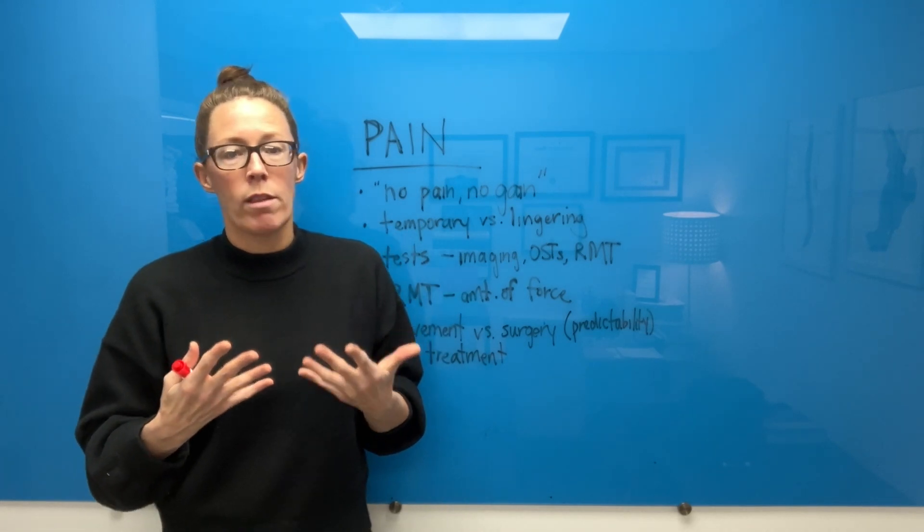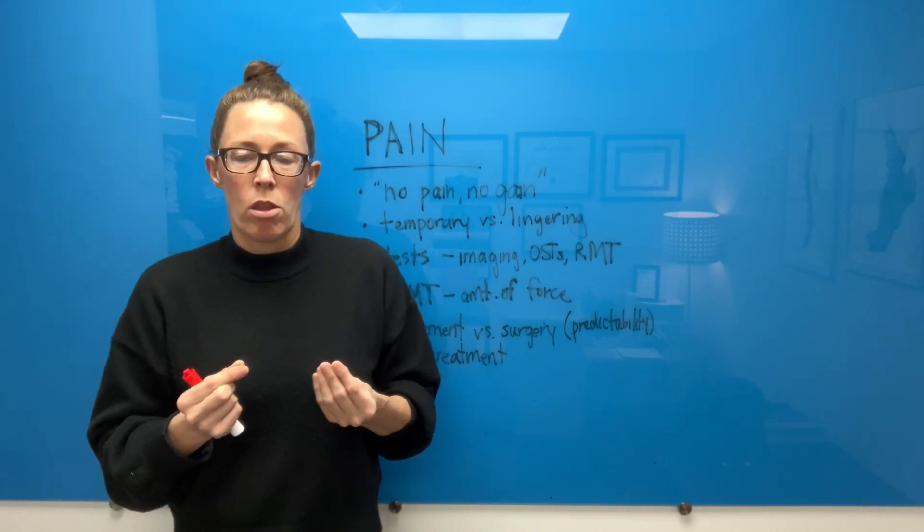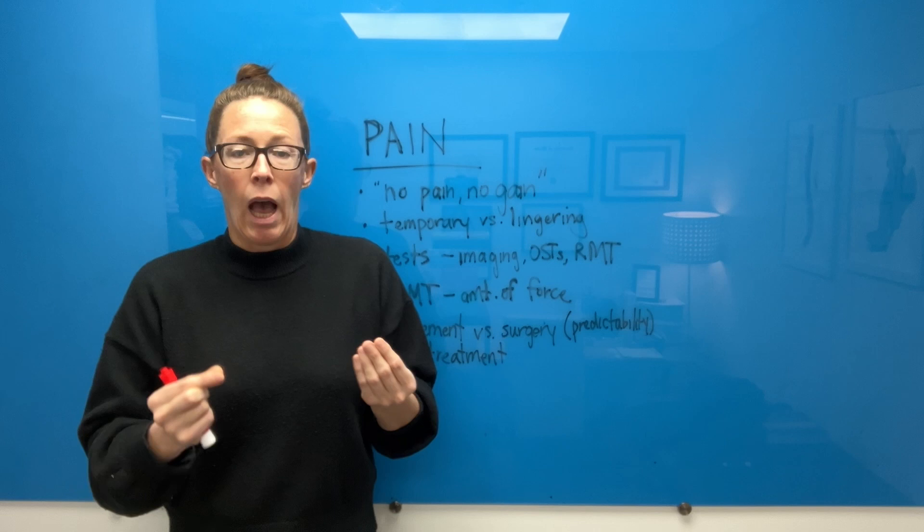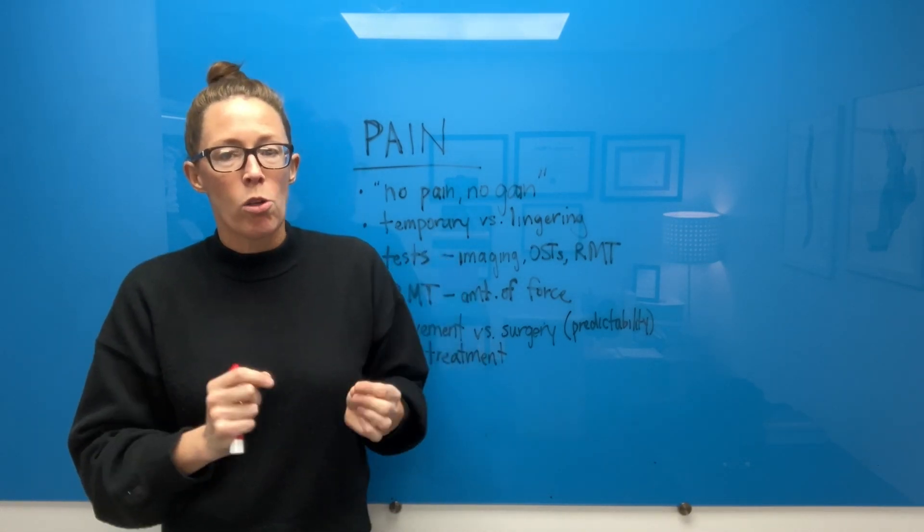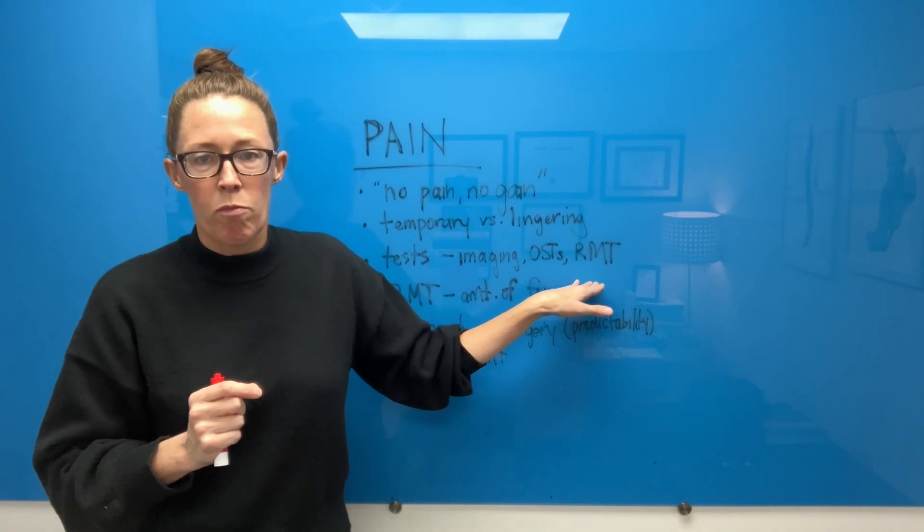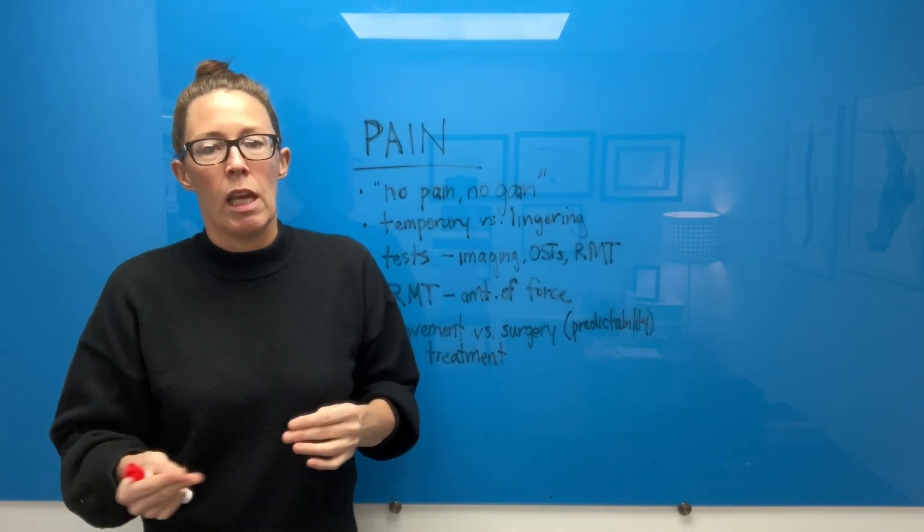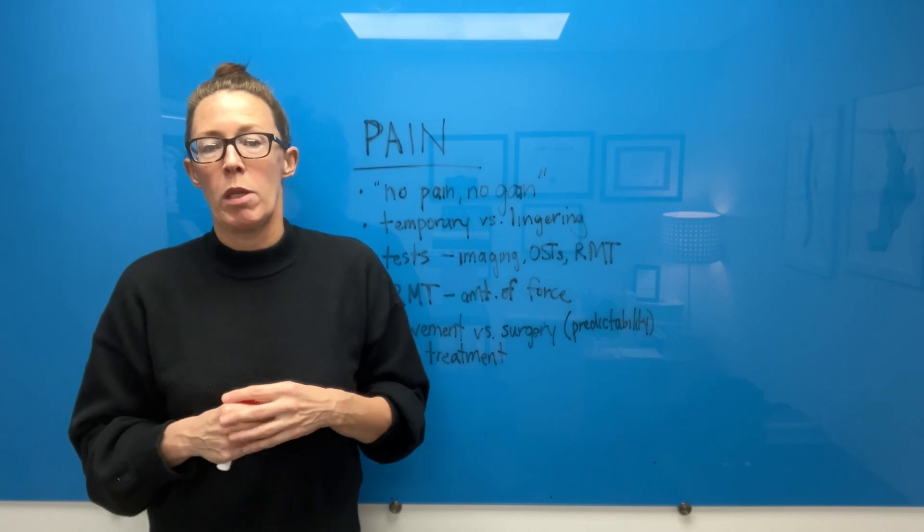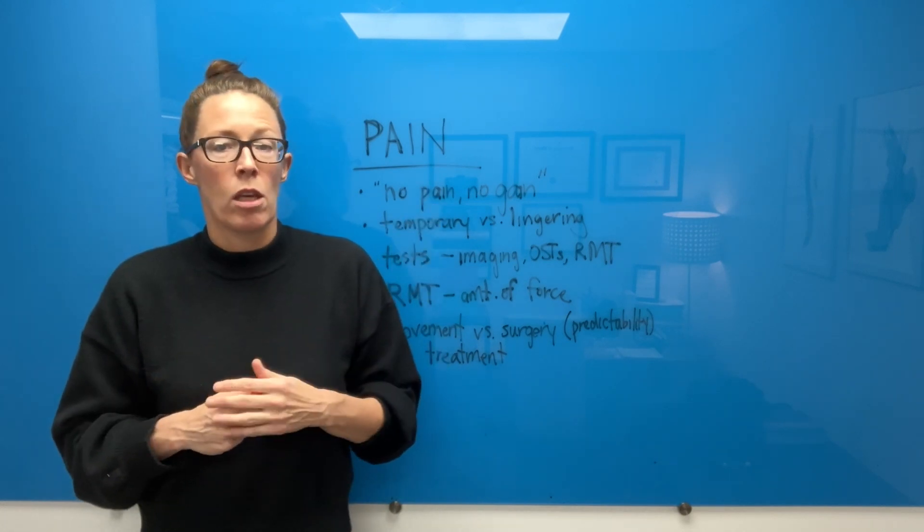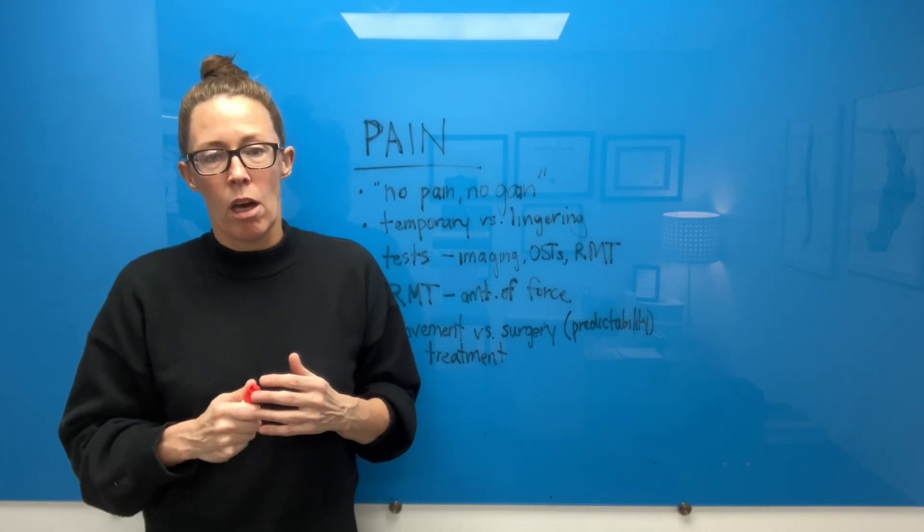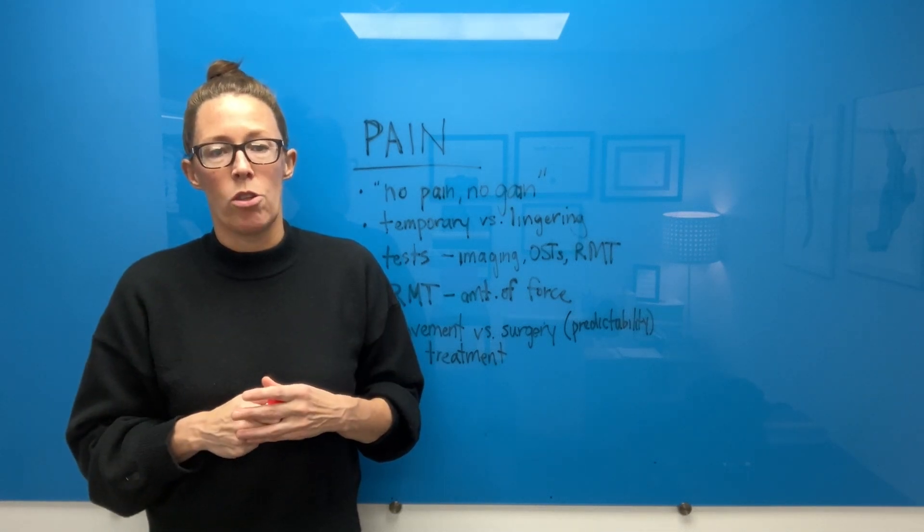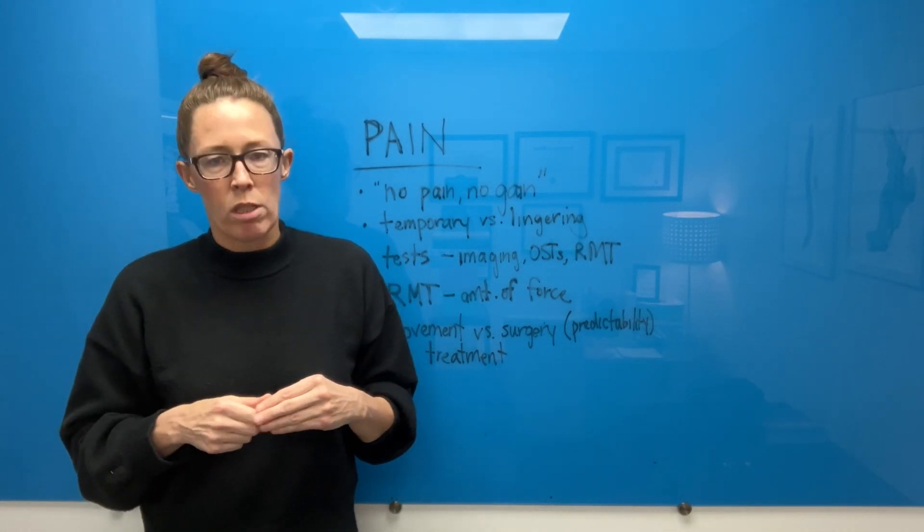I do not have a magic wand to tell me which direction that thoracic spine needs. I have testing that I use to the best of my ability, but I also know that it's called repeated movement testing because you need to do it repeatedly. And while some people might think that 30 repetitions, which literally takes three minutes, is repeated, it's not.